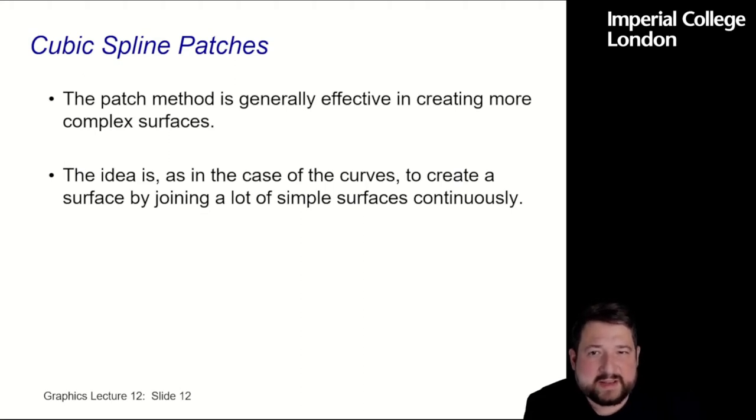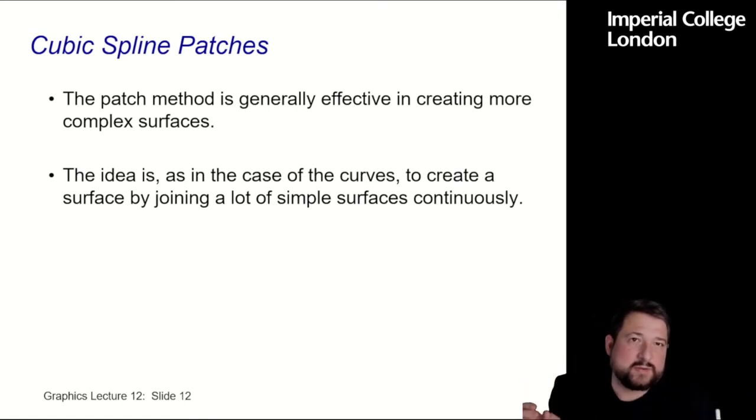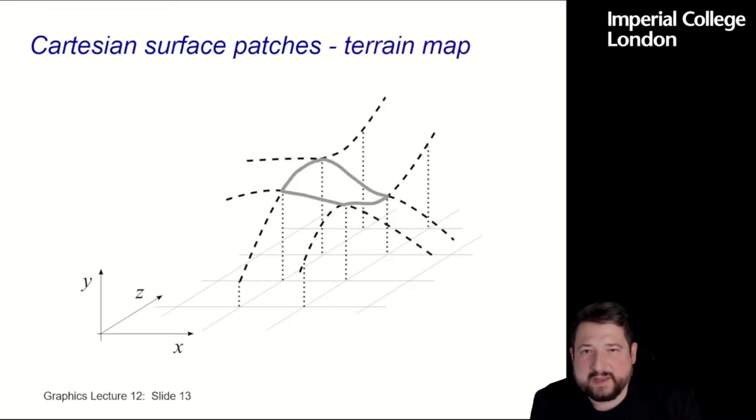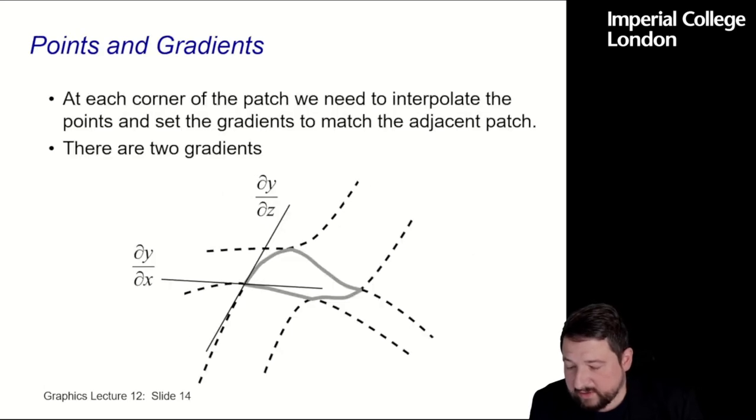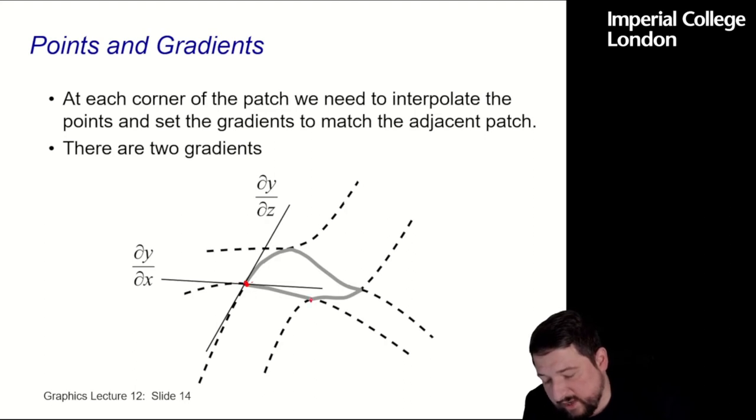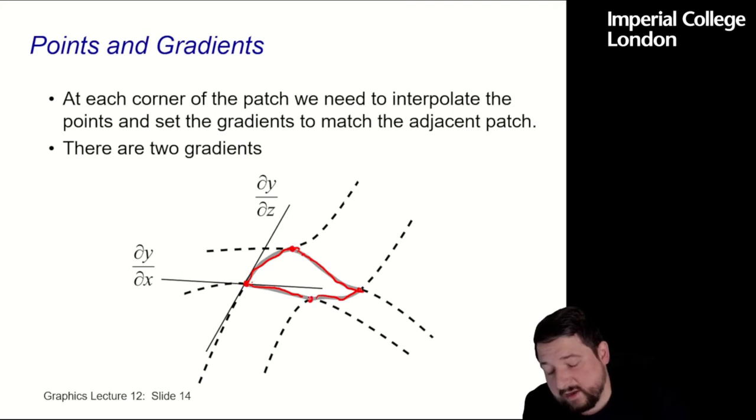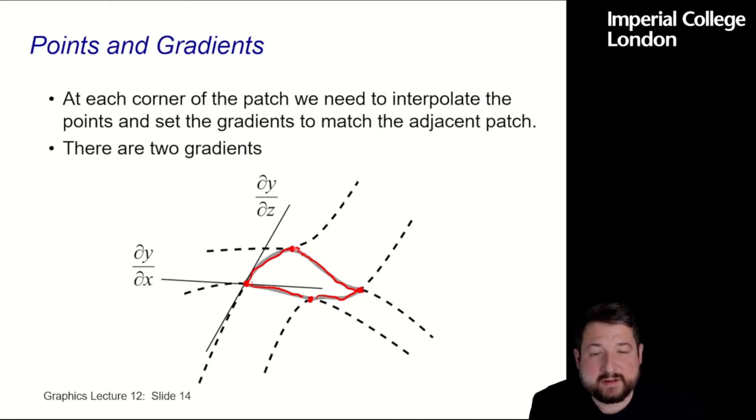So the patch method is generally effective in creating more complex surfaces. And again, like before, the idea is, as in the case of curves, is the same as before with the curves, that in the control points, you make sure that the number of conditions are met. So the joints, for example, the first derivative is the same. So this is the theorem, but really what this means is, again, for the points, for the joint points here, I want to make sure that, for example, my derivatives are equal.